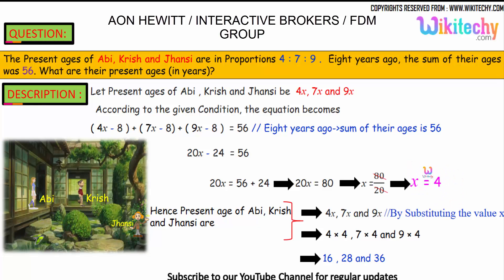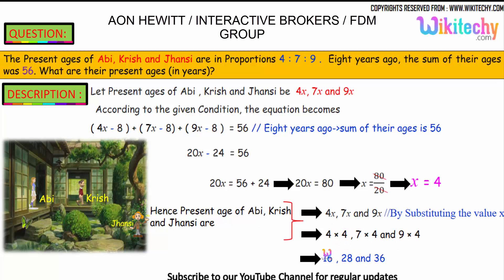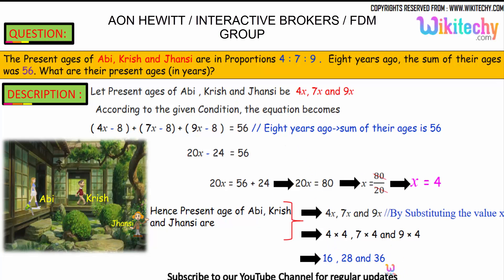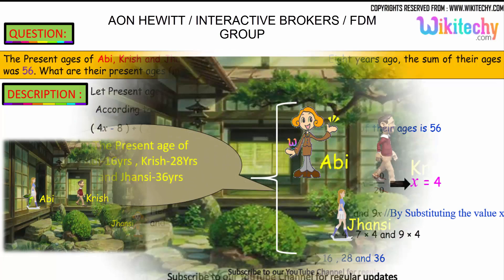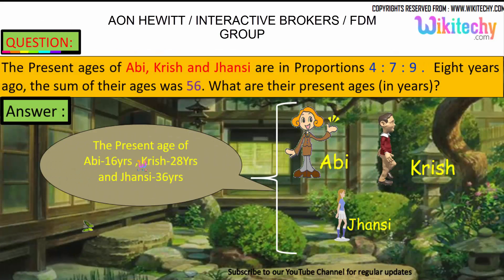The value of x is 4. The present ages are 4x, 7x, and 9x — so 4×4, 7×4, and 9×4. We get 16, 28, and 36. So the present age of Abhi is 16, Krish is 28, and John is 36. That's their ages. The final answer is 16, 28, and 36.